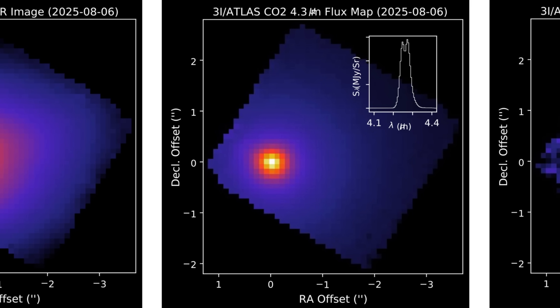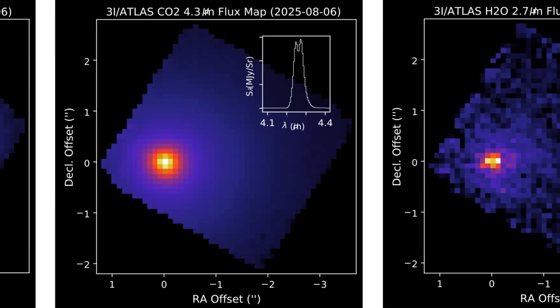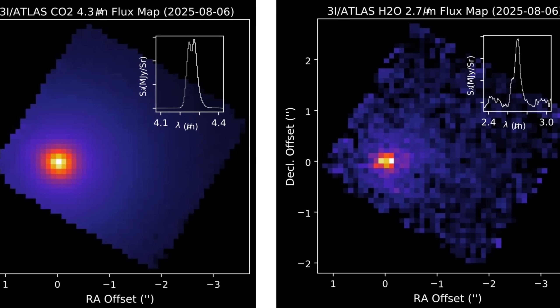Another observatory in Australia confirmed it. And another. The new data was undeniable. 3i Atlas was no longer on its predicted course. It was moving. Something had just altered the path of a Manhattan-sized object in deep space.